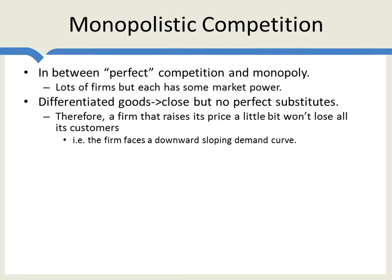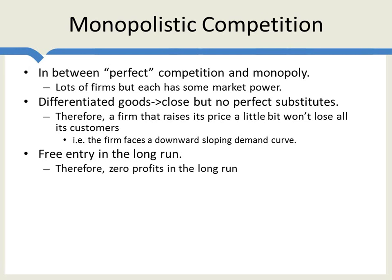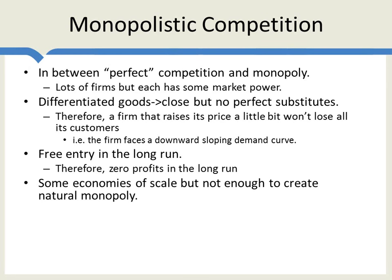Because there are no perfect substitutes, a firm that raises its prices a little bit won't lose all of its customers. In other words, each firm faces a downward sloping demand curve, as with monopoly. The difference from monopoly is that there will be free entry in the long run, and that free entry will drive prices and profits down — perhaps to zero if all firms are homogeneous, or down a lot if firms are heterogeneous with different costs. Each firm will have some economies of scale, but not enough to create a natural monopoly.